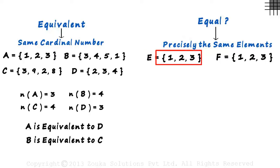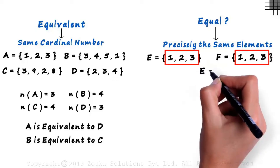Set E has 1, 2 and 3 as its elements. And set F also has 1, 2 and 3 as its elements. Since they have the same elements, we can say that set E is equal to set F.